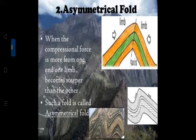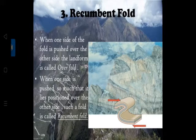Look at the axis - it divides the two planes. Try to relate that with figure 1.5. When the compressional force is more from one end and one limb becomes steeper than the other, such a fold is called an asymmetrical fold.